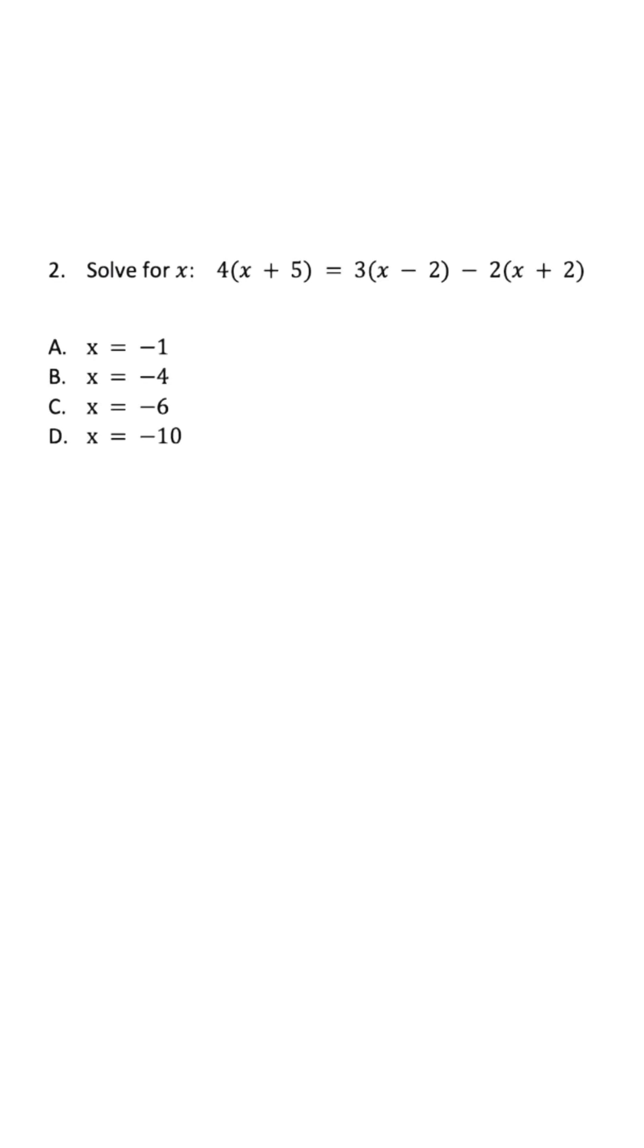This is an equation where we have variables on both sides. To properly solve, we're going to have to distribute three times, and we have to make sure we include this negative when we distribute the last time.